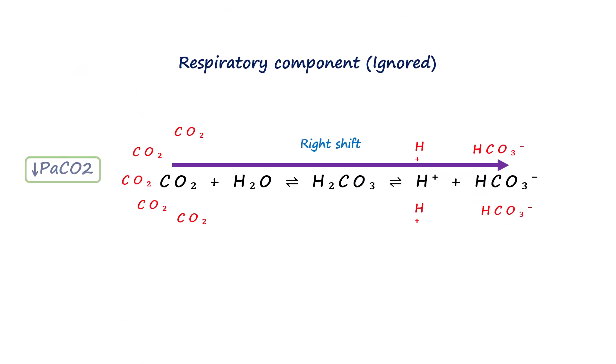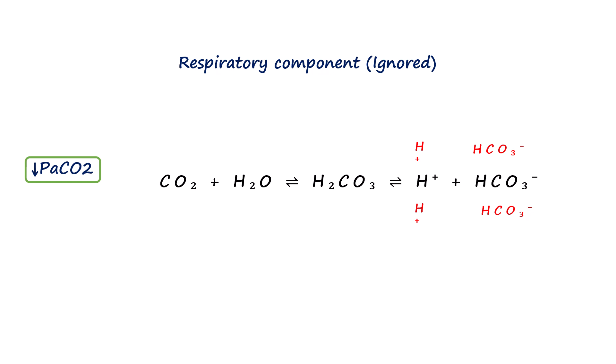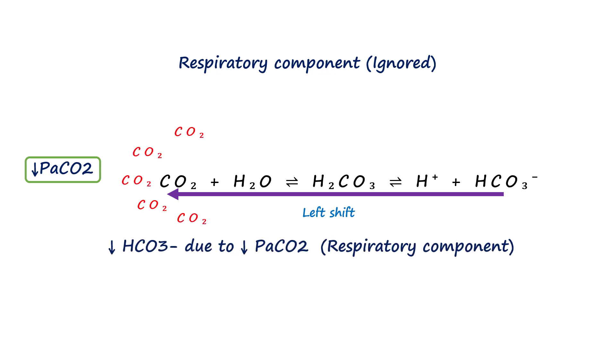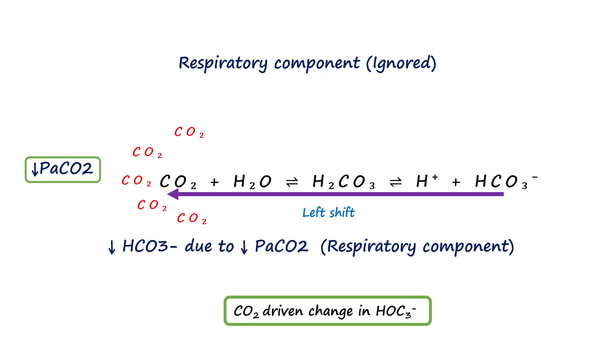When PaCO2 decreases, the reaction shifts left to produce more CO2 from hydrogen and bicarbonate. The bicarbonate then falls, but again this is a CO2-related lowering of bicarbonate and not metabolic acidosis. So in both cases, the change in bicarbonate is the after-effect of a change in CO2.